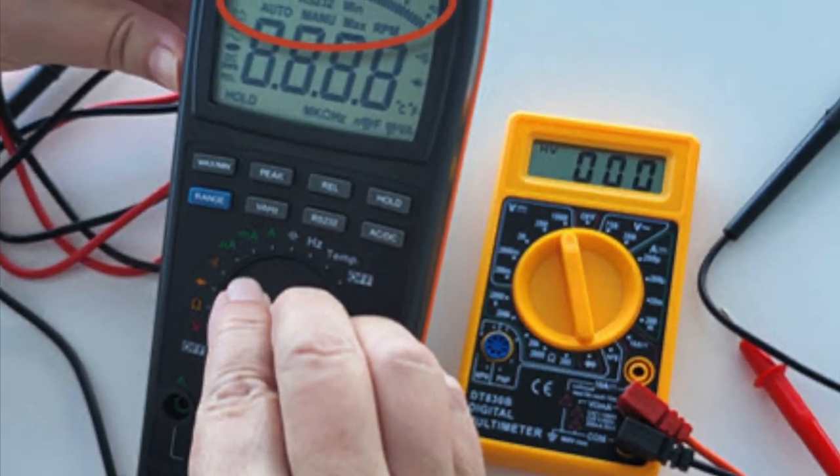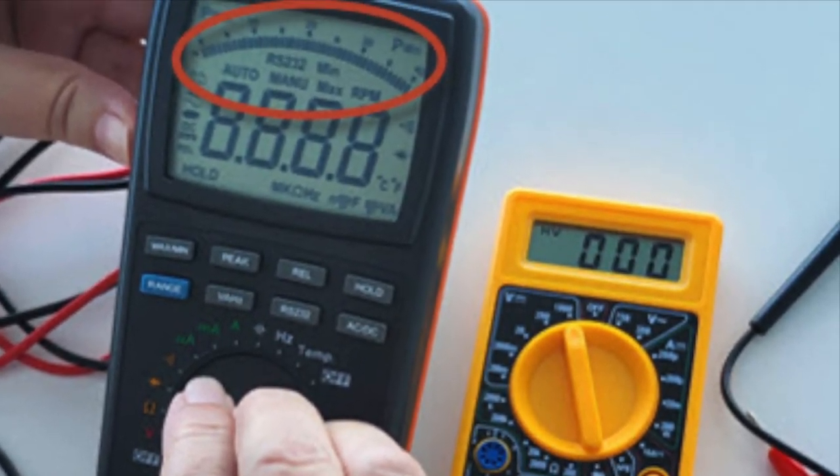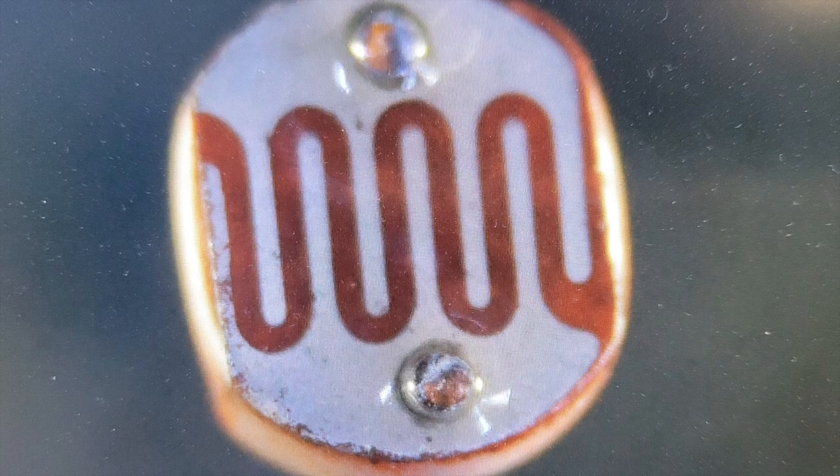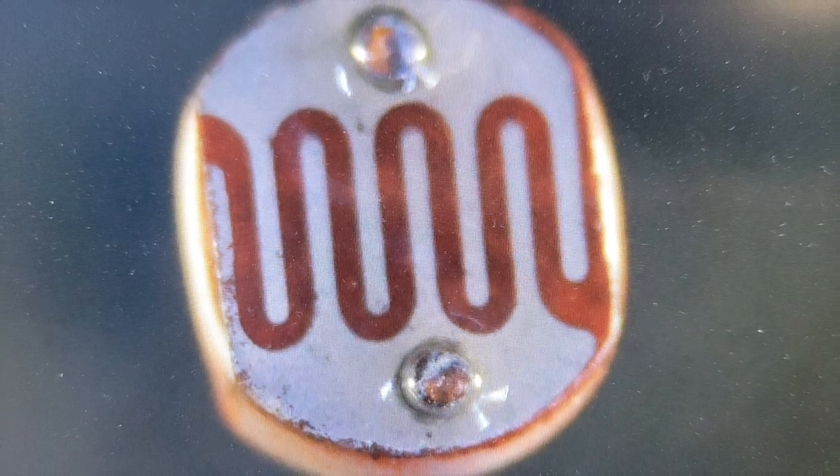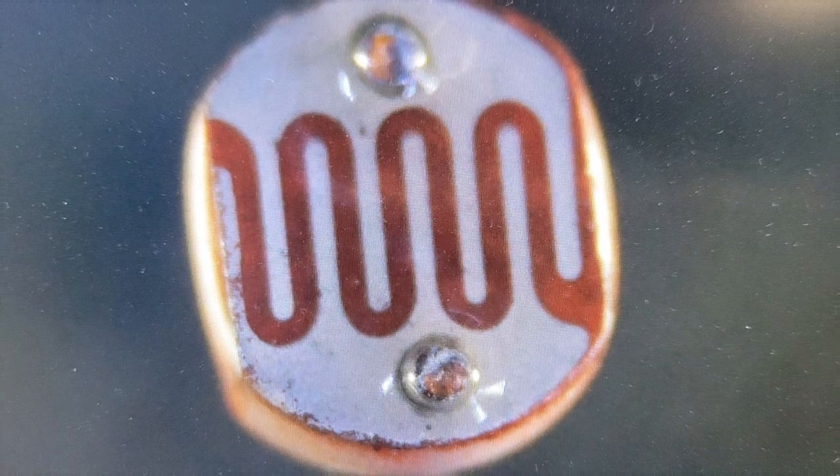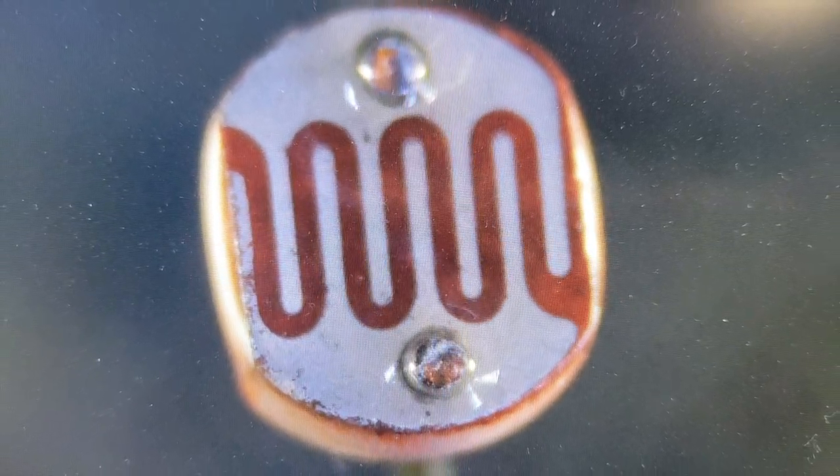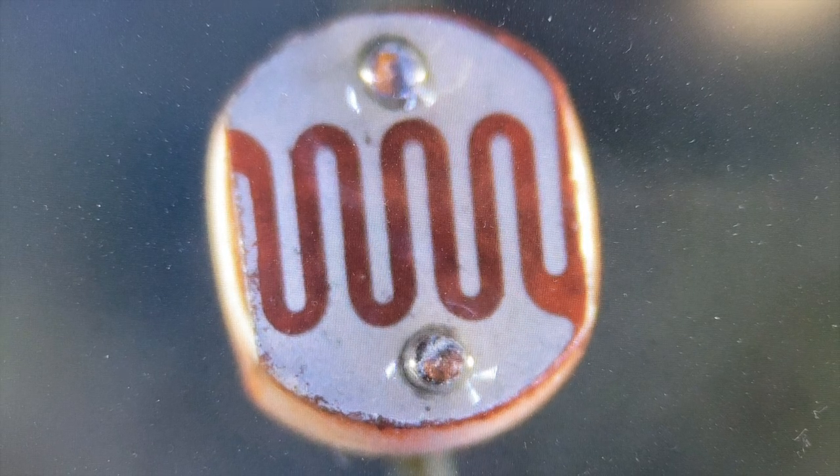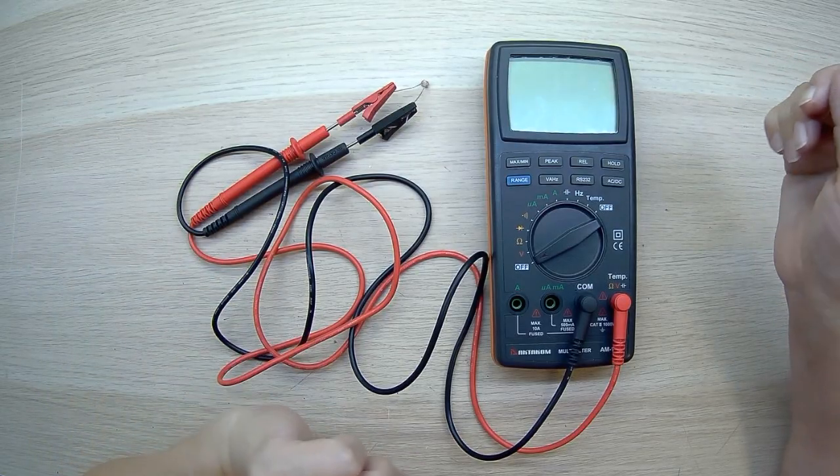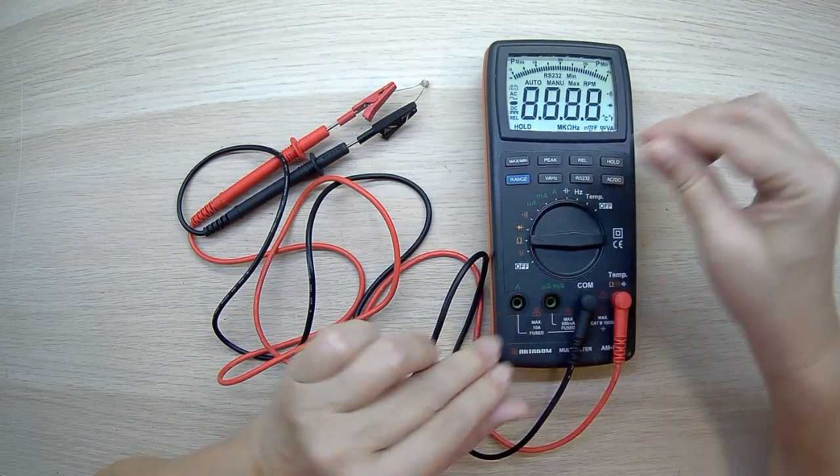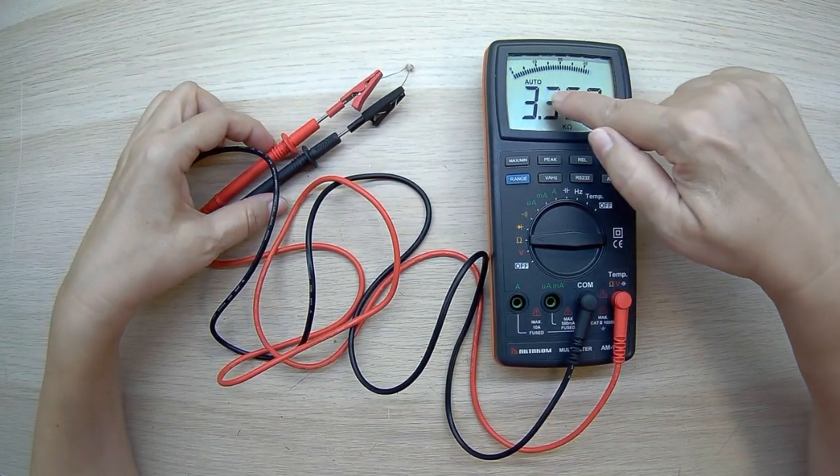Let's take a closer look at two examples of using the graphic scale of our multimeter. The first example of using the graphic scale of the AM1060 professional multimeter is to measure the illumination. To do this we will use a typical photoresistor and connect it to a multimeter. We set the resistance measurement mode with automatic selection of the measurement range.